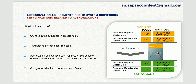There are cases where no authorization object fields are available for a particular activity — for example, activities like 'create' or 'change' may no longer be available. Instead, the authorization check may be performed via another authorization object. Whenever these changes happen, SAP always provides something to replace them. Technically, those fields may have empty values, which are checked in some other authorization check.